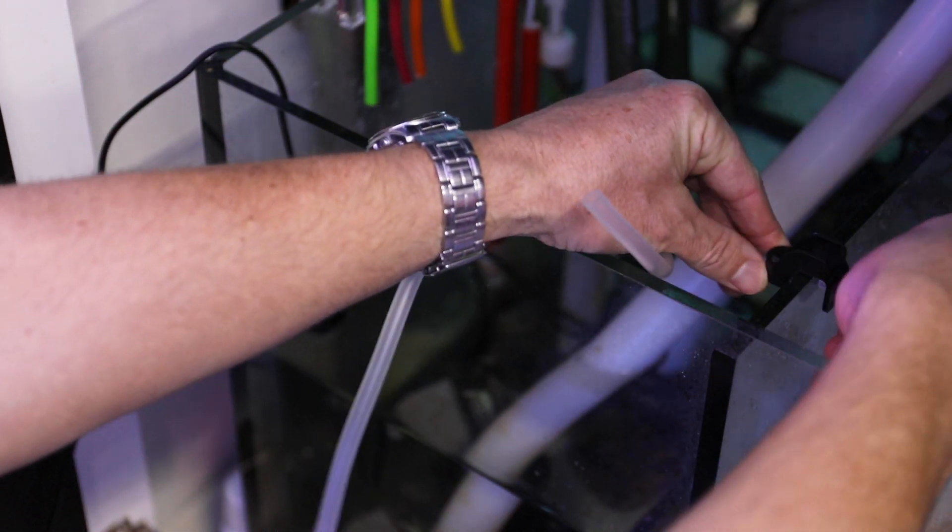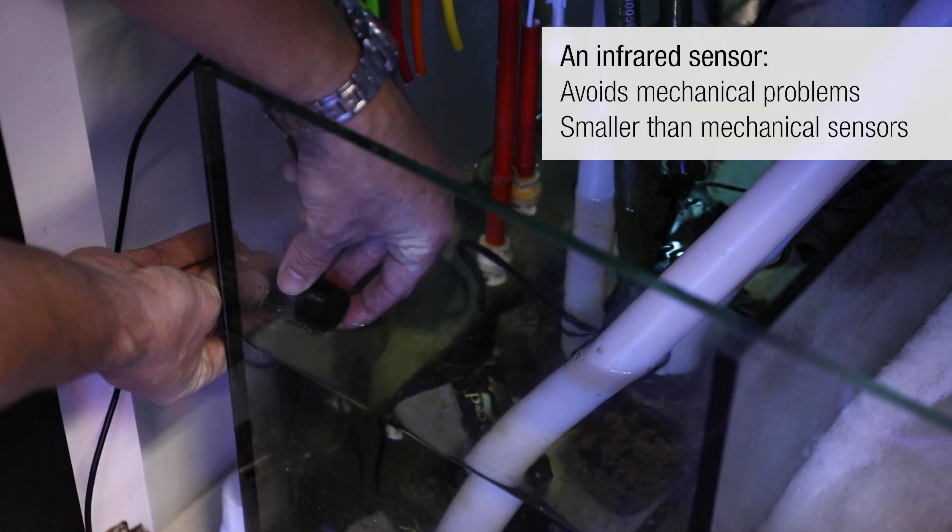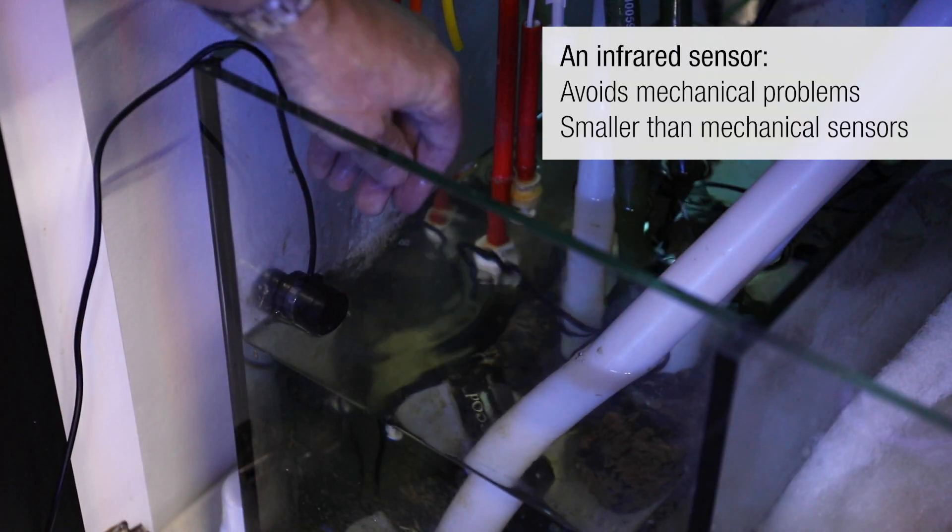Make sure that the water outlet is well above the desired water level. Install the sensor with the water level lower than the sensor in the middle of the sensor.